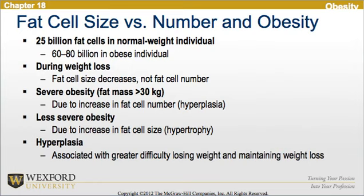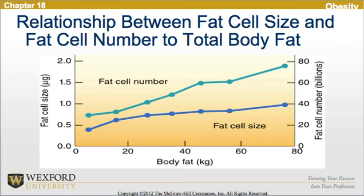Looking at fat cell size versus number in obesity, there are 25 billion fat cells in a normal weight individual compared to 60 to 80 billion in an obese individual. During weight loss, the fat cell size decreases, not the fat cell number. In severe obesity — fat mass greater than 30 kilograms — this is due to an increase in fat cell number, called hyperplasia. In less severe obesity, due to an increase in fat cell size, this is called hypertrophy. Hyperplasia is associated with greater difficulty losing weight and maintaining weight loss. This graph shows the relationship between fat cell size and fat cell number to total body fat.